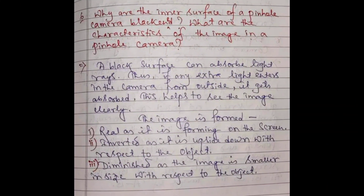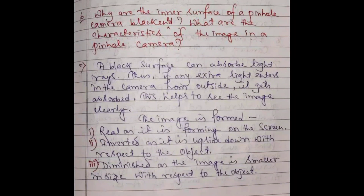Why are the inner surfaces of a pinhole camera blackened? A black surface absorbs light rays; thus, if any extra light enters the camera from outside, it gets absorbed, helping to see the image clearly. The characteristics of the image in a pinhole camera are: number one — real, as it forms on the screen; number two — inverted, as it is upside down with respect to the object; number three — diminished, as the image is smaller in size than the object.